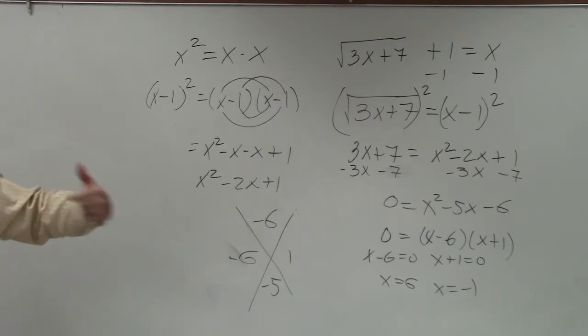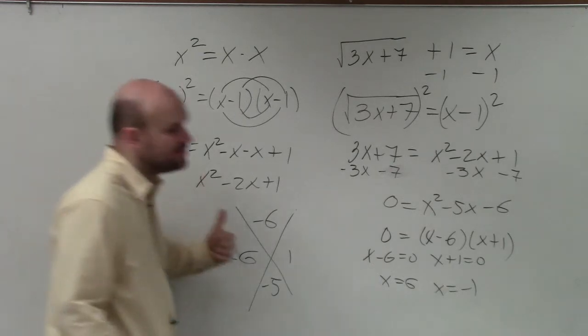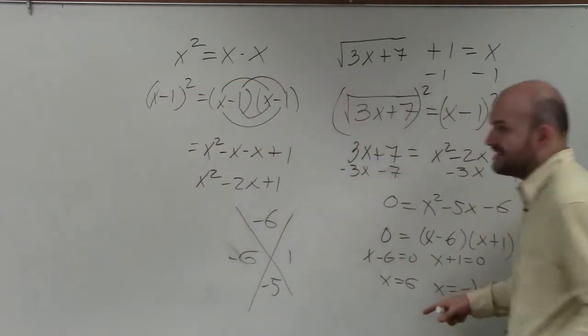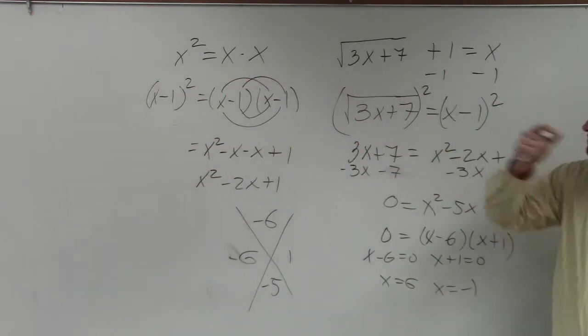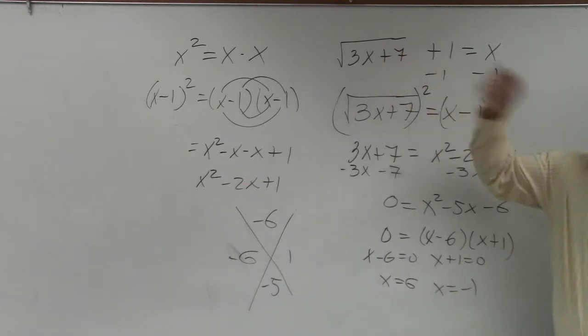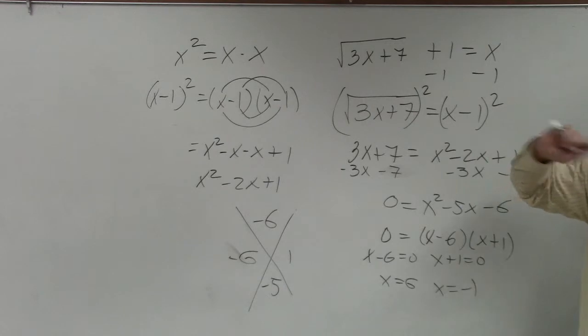All right? You cannot just assume that your answers are always going to be correct. So we take 6 and we plug it back in. 3 times 6 is going to be 18 plus 7 is going to be 25. The square root of 25 is going to be 5 plus 1 is 6. Well, if I plug 6 in for x here, I get 6. So 6 is equal to 6.